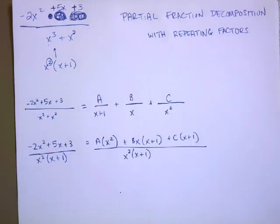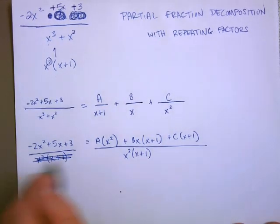If I factored this out, that was still the x squared times the x plus 1. And once again, we find out that our denominators cancel out.